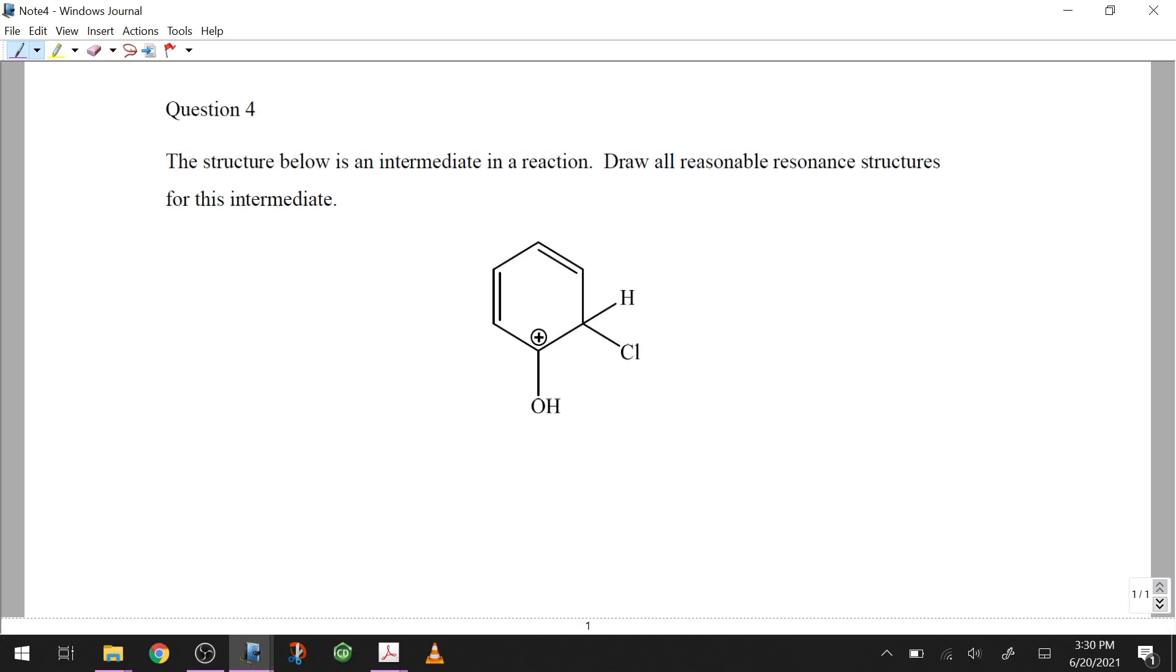Question four was a resonance structure question, just getting used to moving around the electrons and being able to see what's happening. This is particularly important for a case like this, because once we talk about aromatic rings, which is not until organic two, but once we get to that point, this is an intermediate you will see all the time, or ones that are very similar, where you've got a cation on the ring and not entirely an aromatic system left. And there's some reasons why that's going to do what it does.